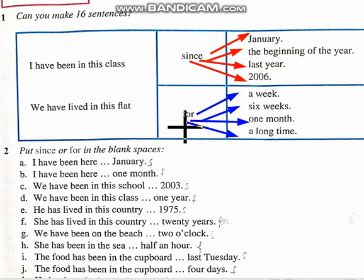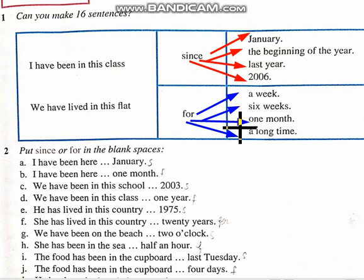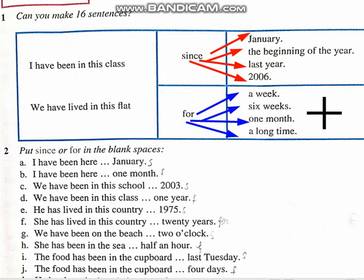'For' is used for the duration of time — as a week, six weeks, one month, a long time. For more examples, we can see: for two hours, for many years. Now we are going to start our exercise. Put 'since' or 'for' in the blank spaces.